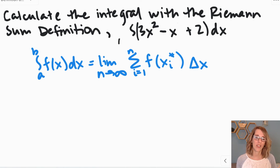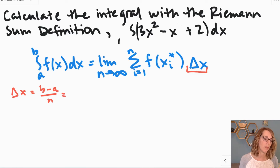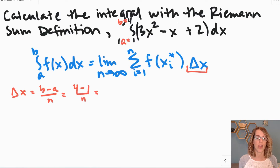We're going to calculate this integral using the limit definition. We start by figuring out delta x, which is the width — that's the interval width b minus a divided by the number of rectangles n. We're going from 1 to 4, so a equals 1 and b equals 4. That calculation gives us 4 minus 1 divided by n, which is 3 over n. So we can replace delta x with 3 over n.